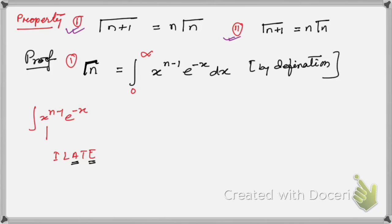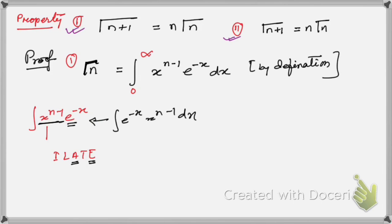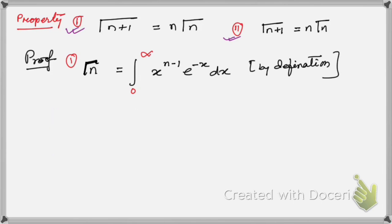The algebraic function should appear before the exponential function. So this is the algebraic function and this is the exponential function. If you have it in the form e^(−x) · x^(n−1) dx, then you have to rearrange it into this correct order.